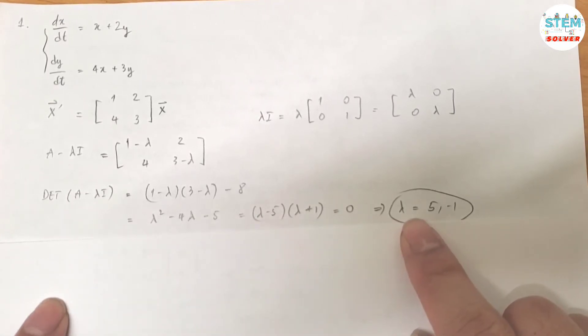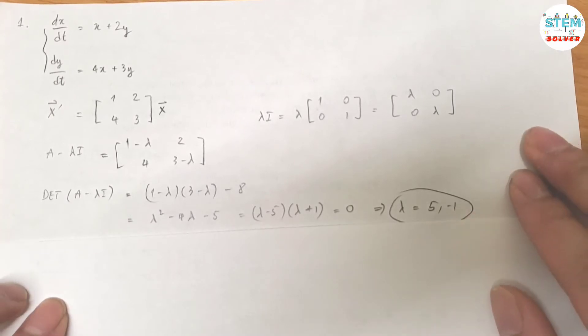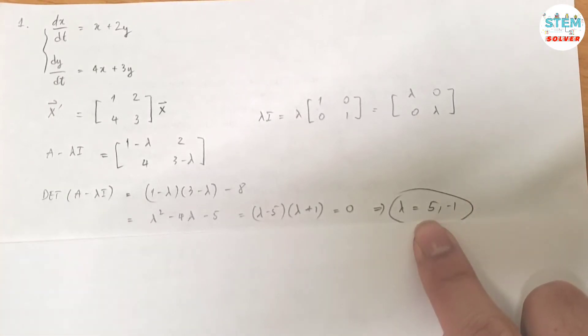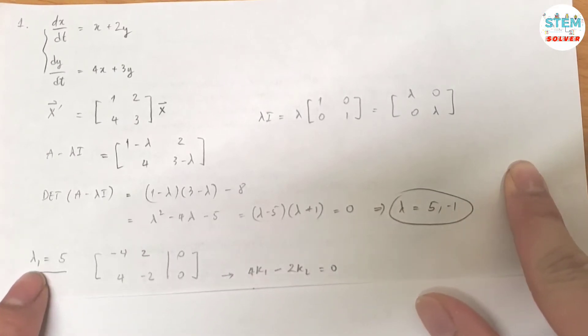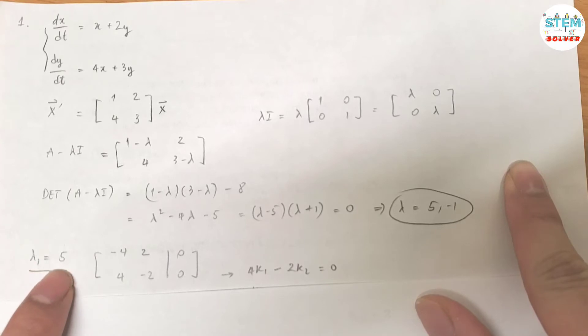So for lambda, you will get lambda equals 5 and negative 1. Alright, so here's your eigenvalues. So for each eigenvalue, you will get an eigenvector for it.